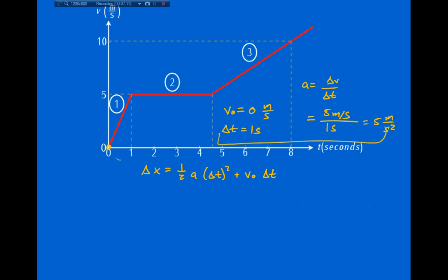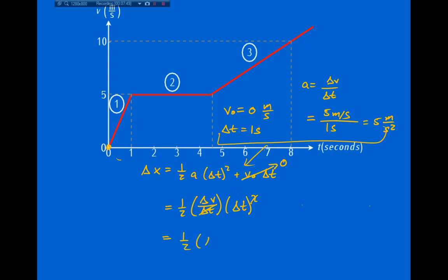Plugging into the formula: delta x equals one-half times acceleration times delta t squared plus v-naught delta t. Since a is delta v over delta t, one of those delta t's cancels with the delta t squared, giving us one-half delta v delta t. The v-naught term goes to zero. So delta v is five meters per second and delta t is one second: one-half times five times one equals 2.5 meters. This is my displacement during segment one.